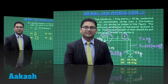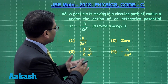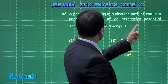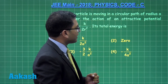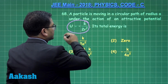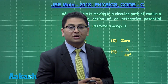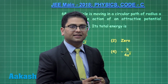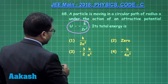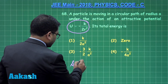Let's move to question number 68 — a very straightforward question. A particle is moving in a circular path of radius a under the action of an attractive potential energy u equals minus k divided by 2r squared. We need to compute the total energy.